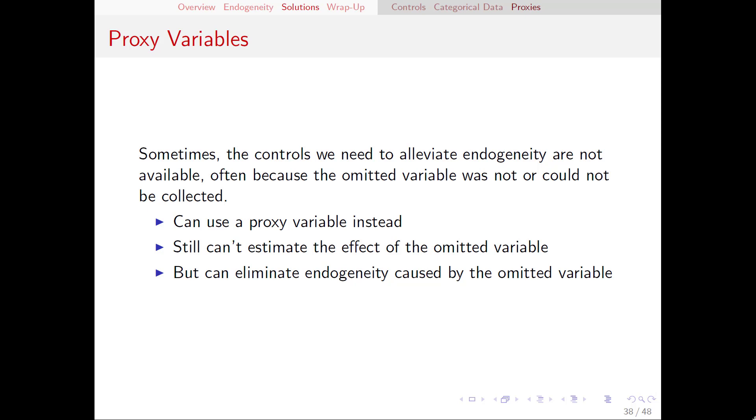A proxy variable is a variable that we put in the regression in place of an omitted variable that we couldn't find. Proxies are not the same as the omitted variable that they are replacing, but what they can do is eliminate the endogeneity or at least significantly reduce the endogeneity caused by the omitted variable. It still doesn't allow us to estimate the effect of the omitted variable, but usually we don't actually care about that. Controls and proxies are there to help us establish causality for the variables we do care about.